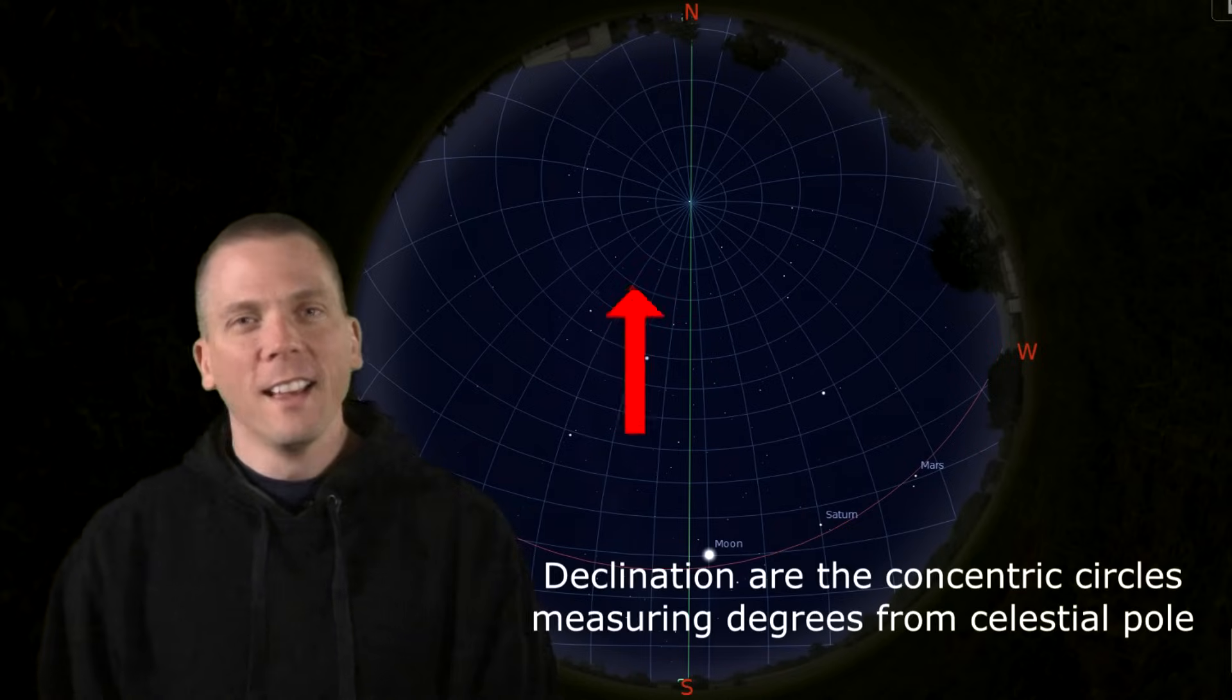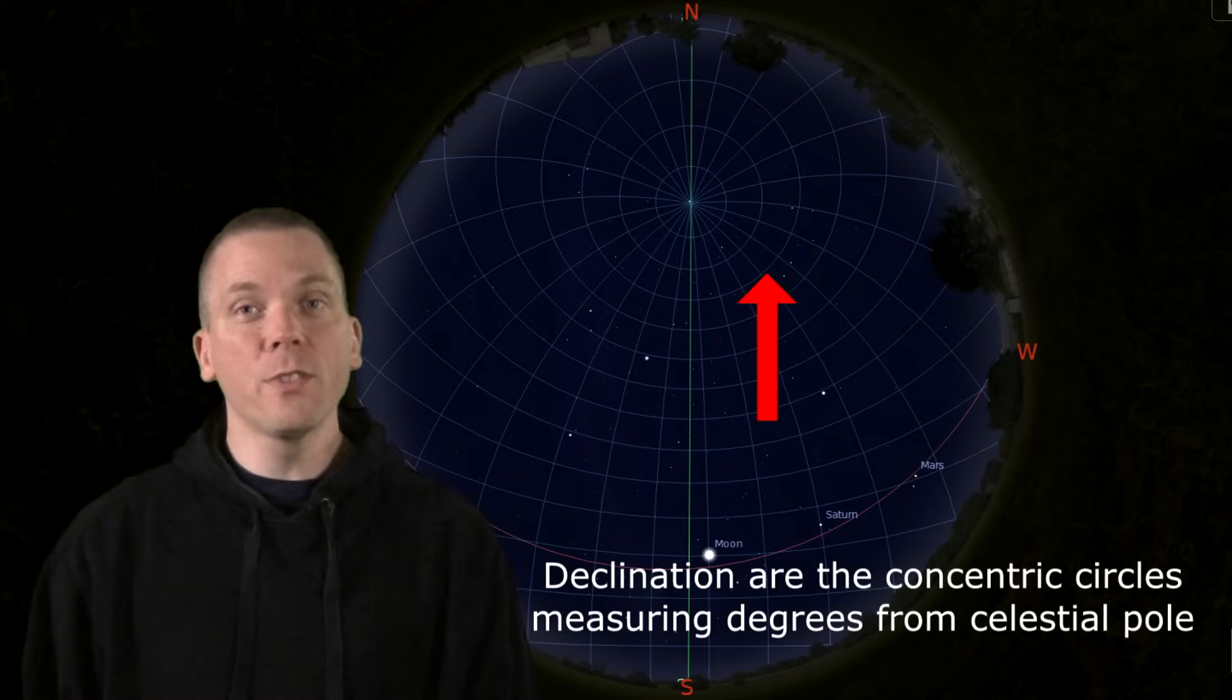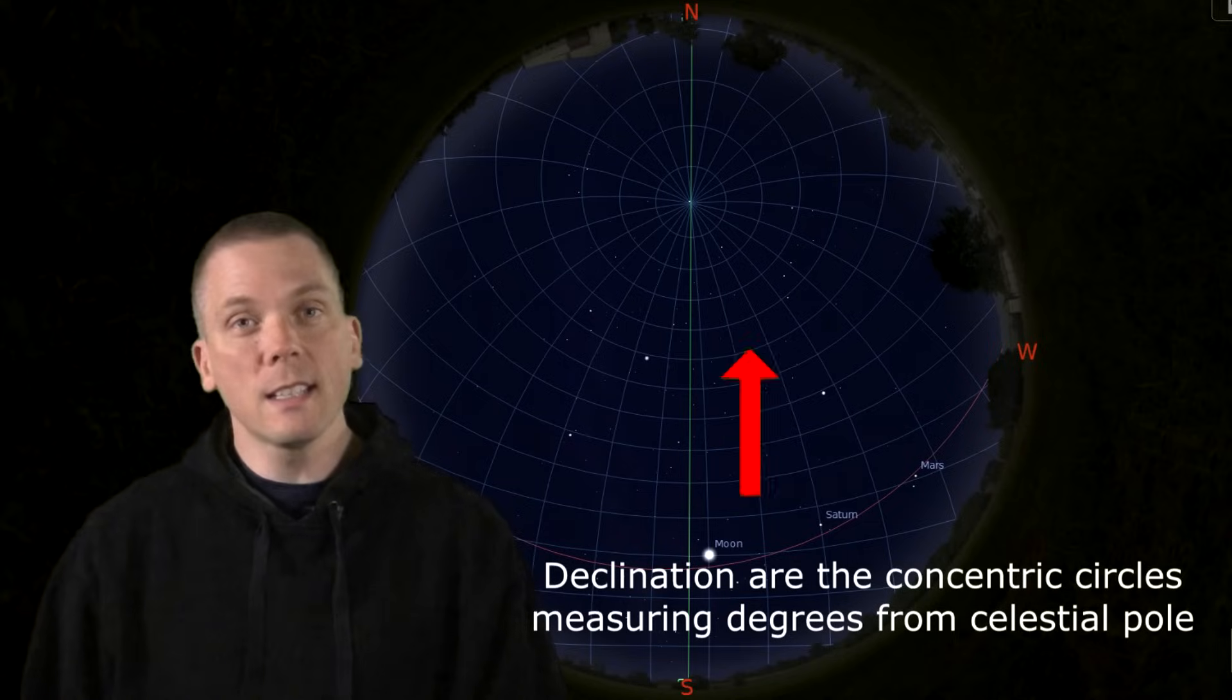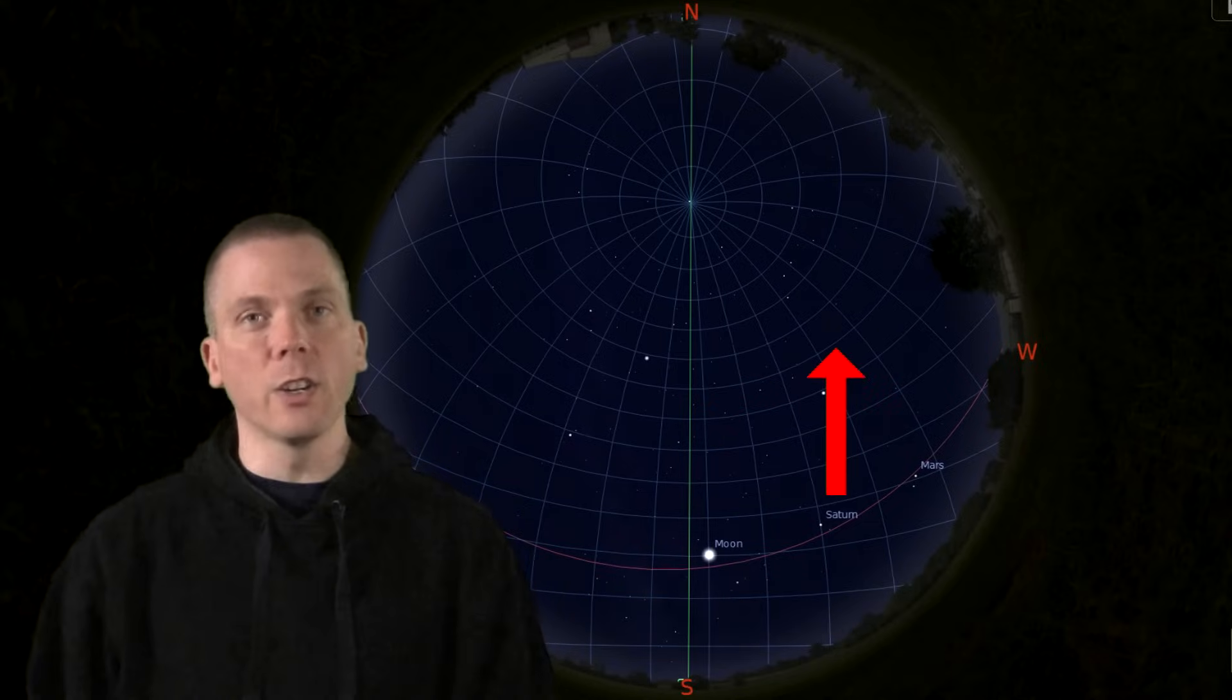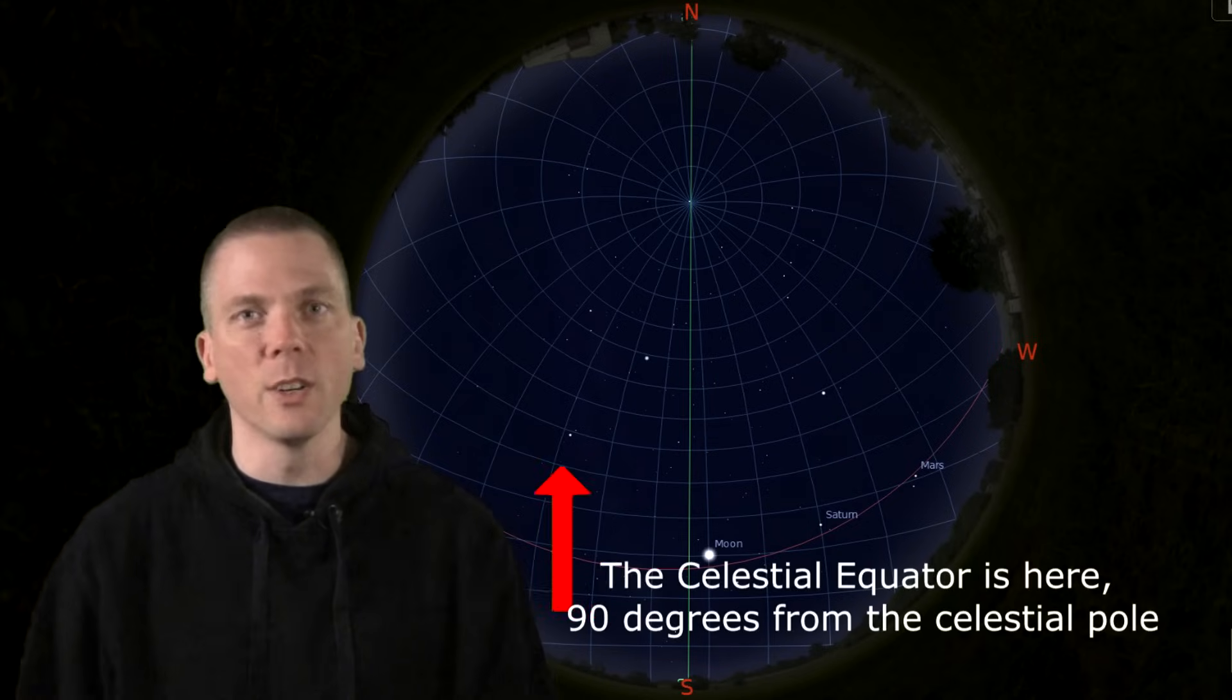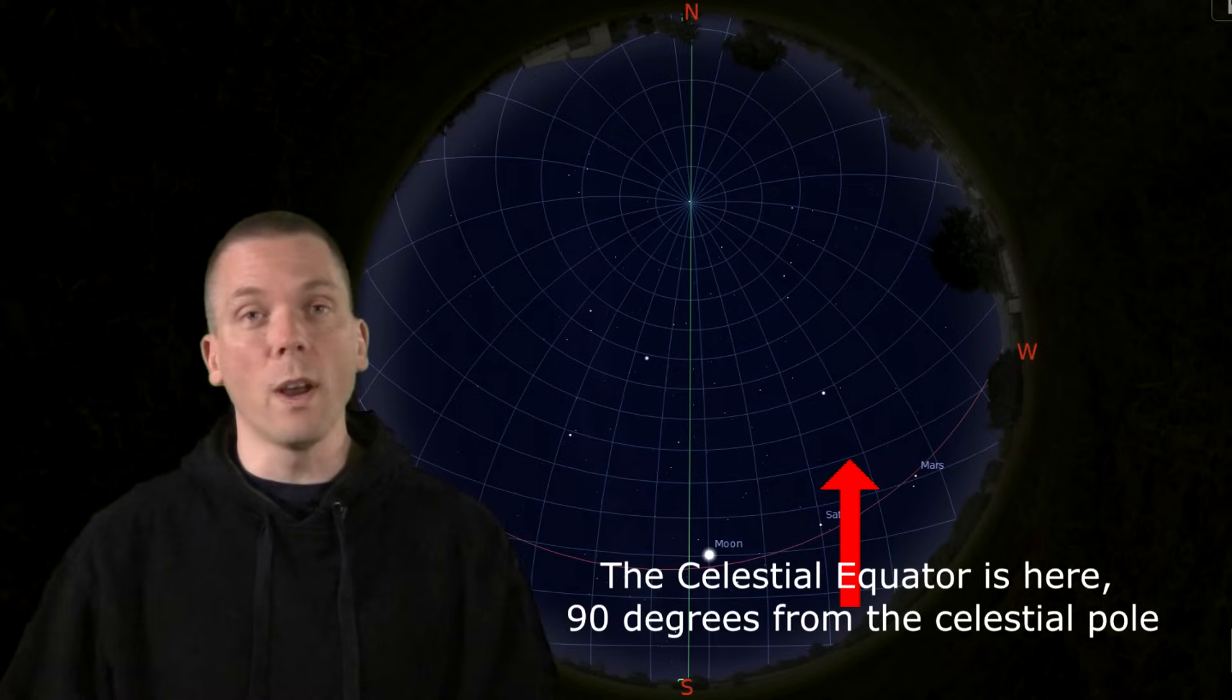Easy enough, right? And Declination is simply the number of degrees away from the celestial poles. So the degrees from the celestial pole to the celestial equator is 90 degrees, the equator itself being zero, just like the degrees from our north pole to our equator on Earth.